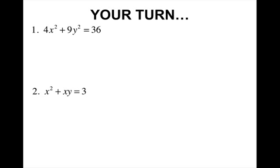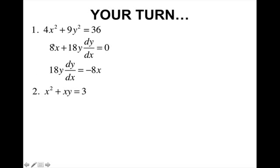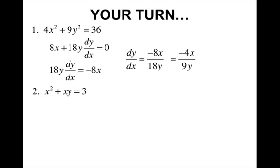Your turn — go ahead and pause. Welcome back. On the first practice problem, you take the derivative of 4x squared with respect to x, which gives 8x. The derivative of 9y squared with respect to x is 18y dy/dx. The constant term has derivative zero. Now solving for dy/dx: subtract 8x to the other side and divide by 18y to get dy/dx by itself, then simplify the fraction. So dy/dx equals negative 4x over 9y.